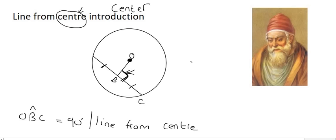So line from center to the midpoint, meaning the halfway point, of a chord. There we go. So the reason that that is 90 degrees is because the line that comes from the center to the midpoint of the chord.